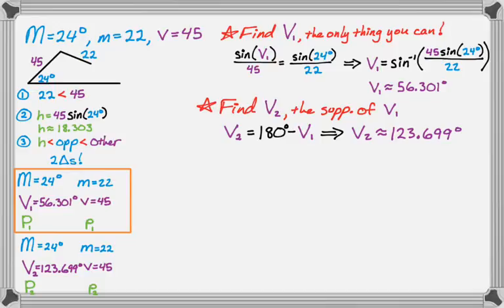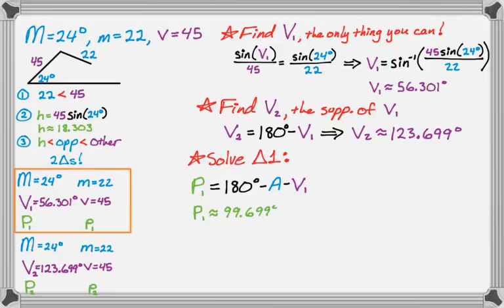So to solve this triangle, I need to find angle P1, and then once I know that, I'll find side P1. Rather, let's use the fact that triangle angles add up to 180. So angle P1 is 180 minus angle A minus V1, which is about 99.699 degrees. So 99.699 degrees goes in our information.